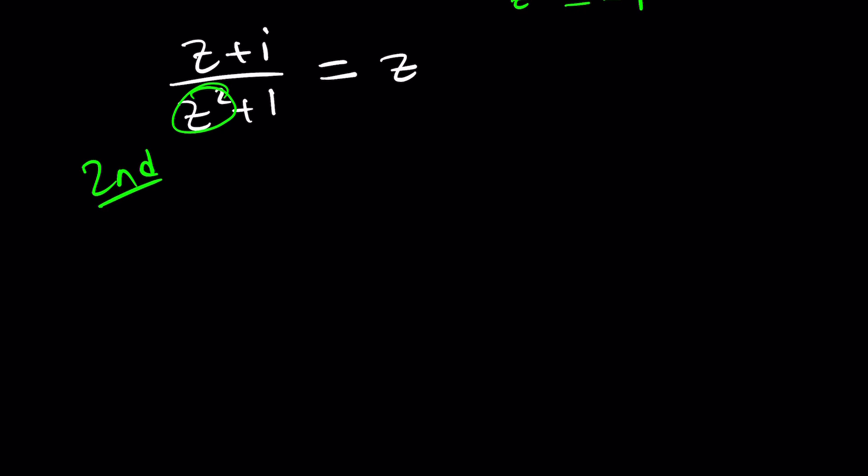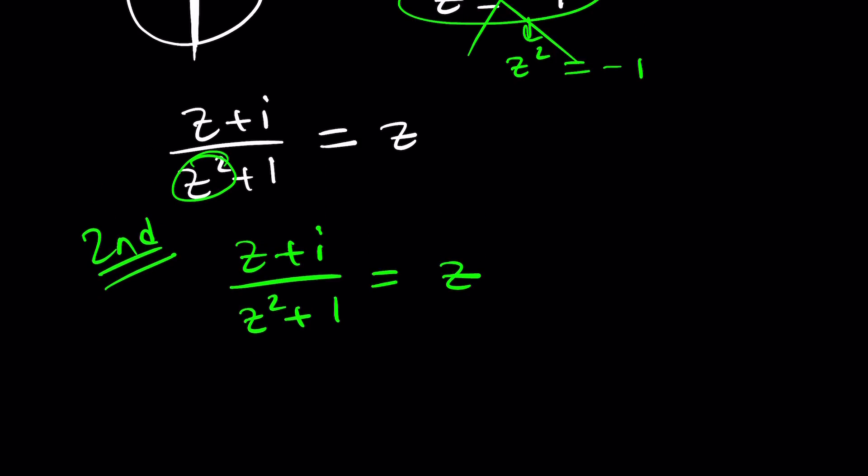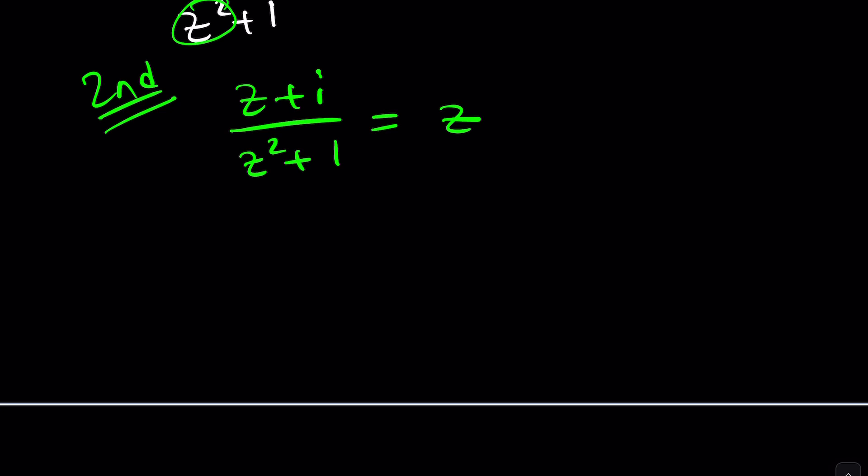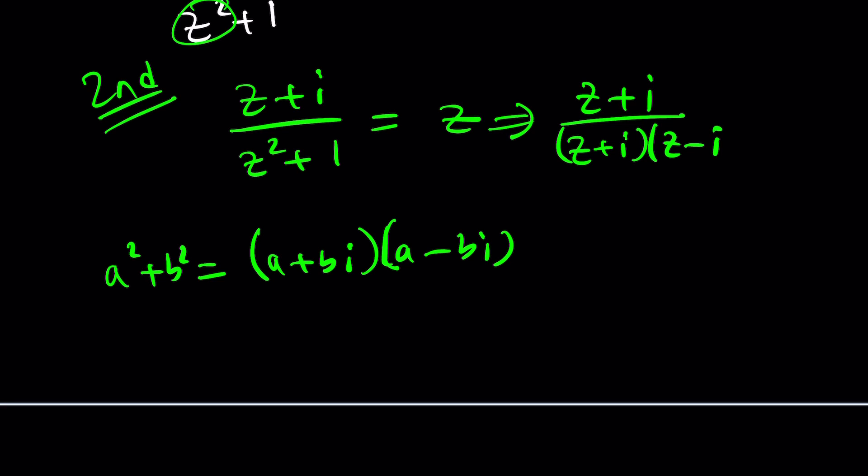All right let's take a look at the second method. So here's how the second method works and this kind of explains why z equals negative i is problematic. Notice that the sum of two squares cannot be factored in the real world but in the complex world it can be factored. a squared plus b squared can be factored into a plus bi multiplied by a minus bi and this is amazing because it allows you to factor sum of two squares. So from here we can write z squared plus one as z plus i times z minus i because i squared is negative one. It's like difference of two squares that turns into a sum of two squares. Now we can get rid of these two things taking note that z should not equal to negative i and then just go with this equation.